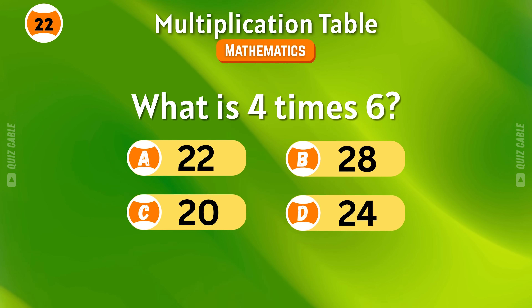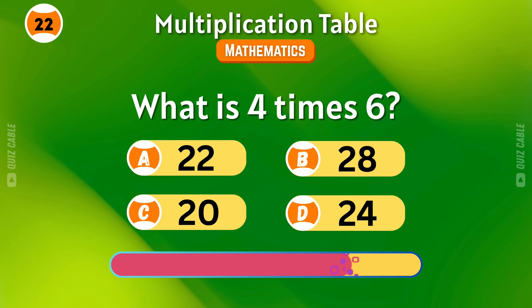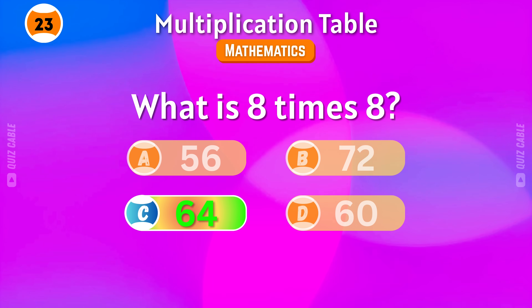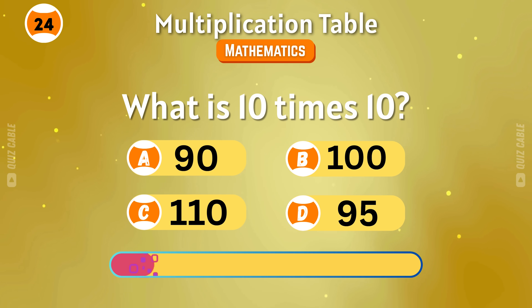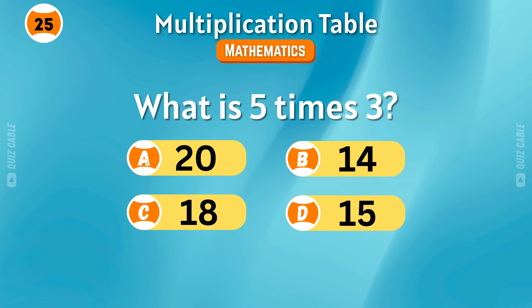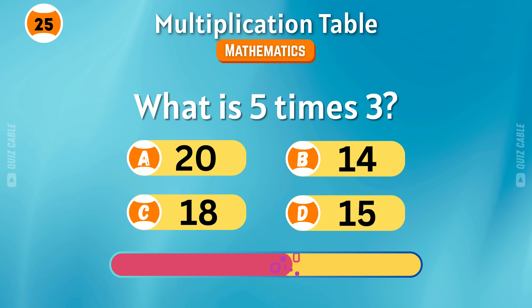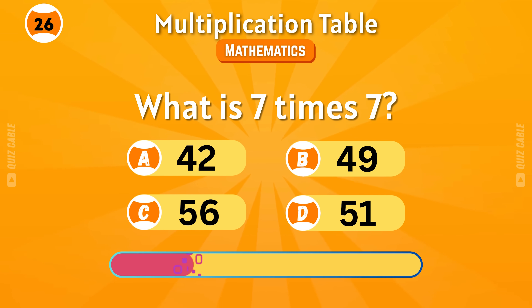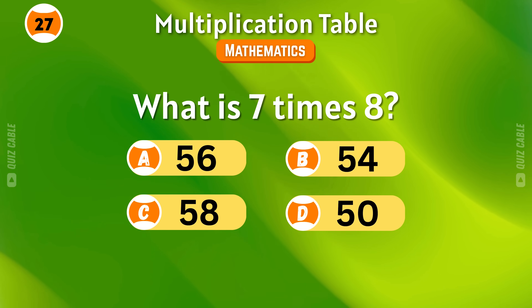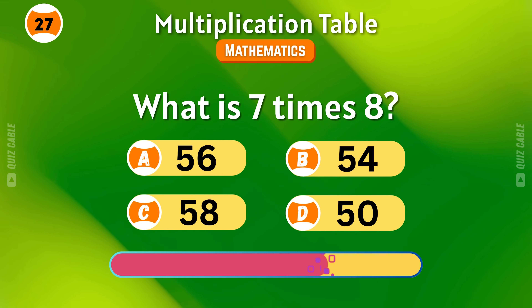What is 3 times 8? 24. What is 4 times 6? 24. What is 8 times 8? 64. What is 10 times 10? 100. What is 5 times 3? 15. What is 7 times 7? 49. What is 7 times 8? 56.